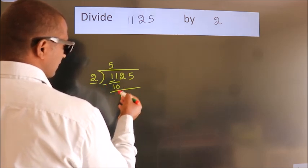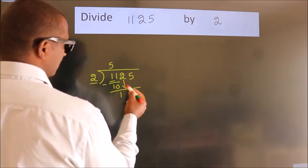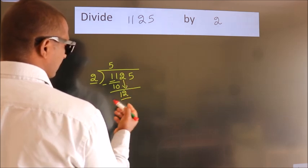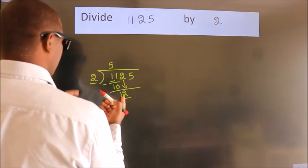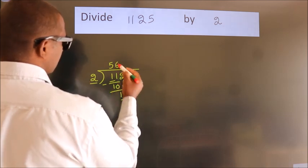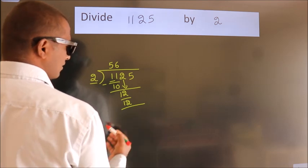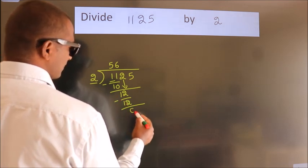After this, bring down the beside number. So 2 down, so 12. When do we get 12? In 2 table, 2 times 6 is 12. Now we subtract, we get 0.